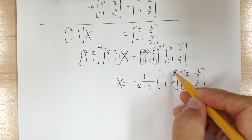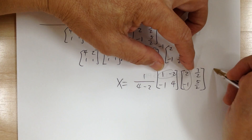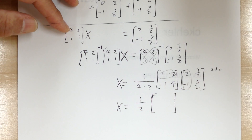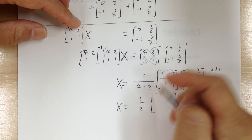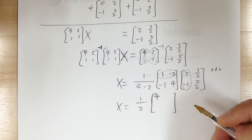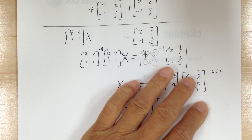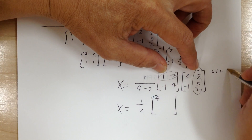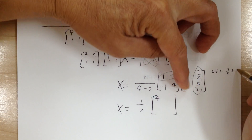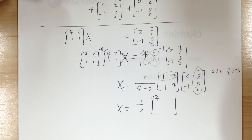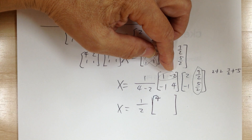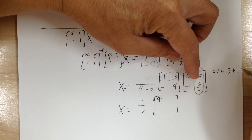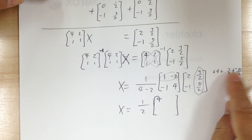Now work out the matrix multiplication. Use the first row, first column: 2 plus 2 gives 4. Then the second column — using a pencil to circle helps keep track. That gives 7/2, and adding gives negative 10/2, which becomes negative 3 over 2.